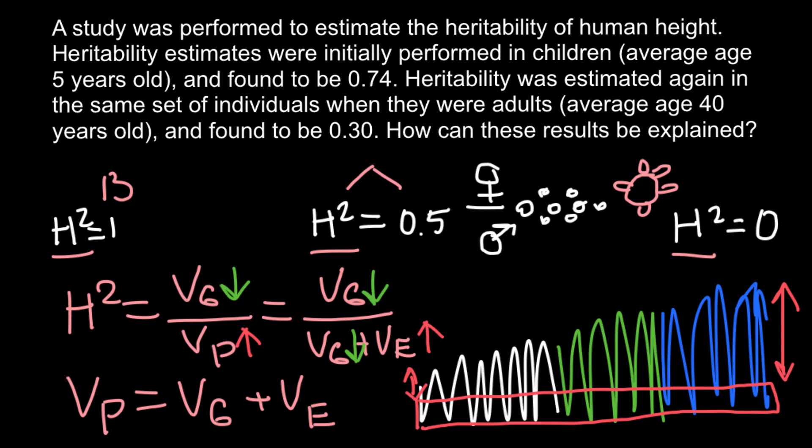One more time, let's return to our formula. Broad sense heritability gives us a relationship between variance due to genetics to the variance of the phenotype, so genetics plus influence of the environment.